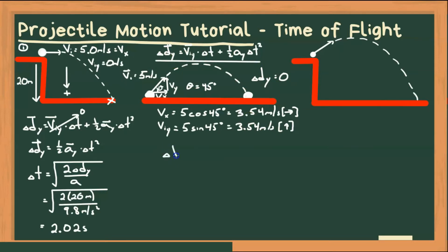So we have delta Dy is equal to Vy, where Vy is, we know what that is, but let's just leave it as a variable for now. Plus one half Ay, again, that's gravity, times time squared. Now in this case, it's delta Dy that's going to be zero.